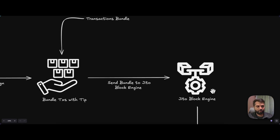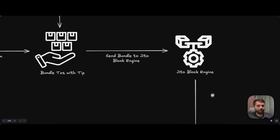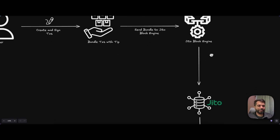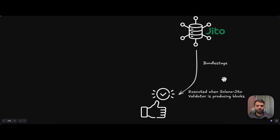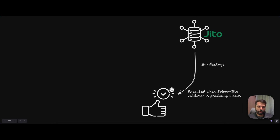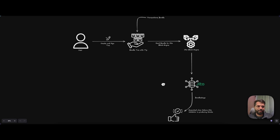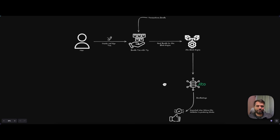The Jito block engine also verifies and simulates all of those transactions in a bundle. If all the checks pass, it sends that bundle to a validator running the Jito client. Jito introduces a new stage called the bundle stage, where bundles are staged before execution. The bundle gets executed when that validator is the slot leader and is producing blocks, at which point all transactions within the bundle execute sequentially.